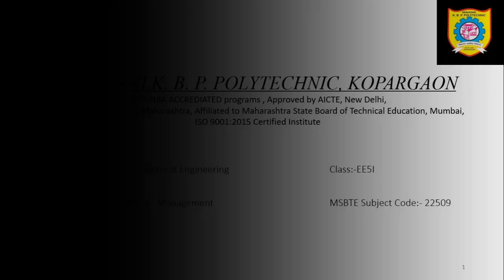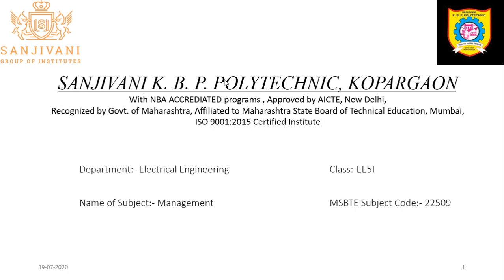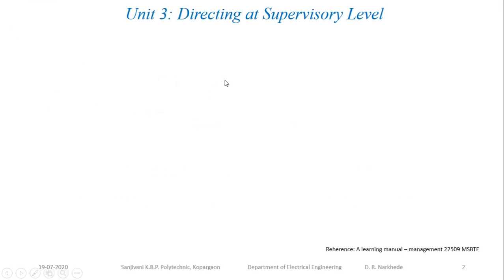In the previous lecture we discussed communication, which means the exchanging of information between sender and receiver. We also discussed the types of communications that normally exist in an organization, that is formal communication as well as informal communication. In this session, we will discuss the various types of communication.